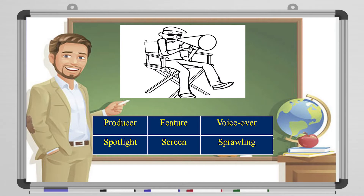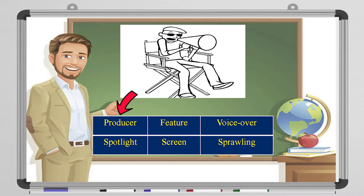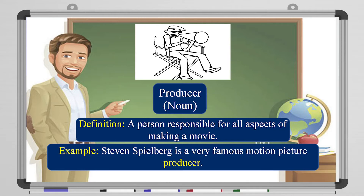Let's look at the other word. We have a guy with a very big cone speaker. I think you can tell from the hat — the hat is a very distinctive feature of this person. It is 'producer' of course. Producer is a noun — a producer is a person who is responsible for all aspects of making a movie. For example, Steven Spielberg is a very famous motion picture producer.